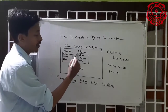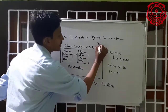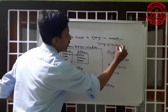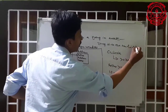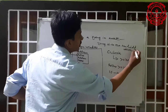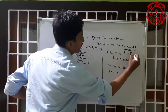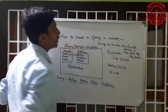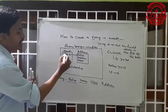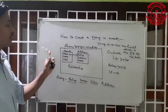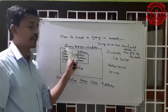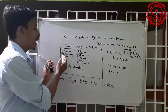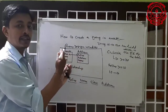You just drag the pointer from roll number to roll number. This roll number is the primary key in one table — just drag it to the roll number in the other table to create the relationship between the two tables. That's why a relationship is needed.